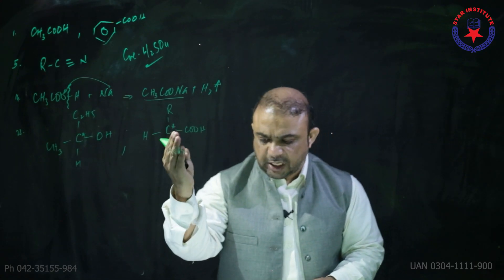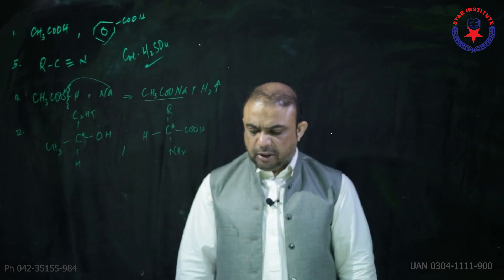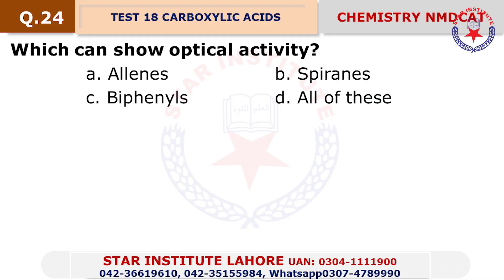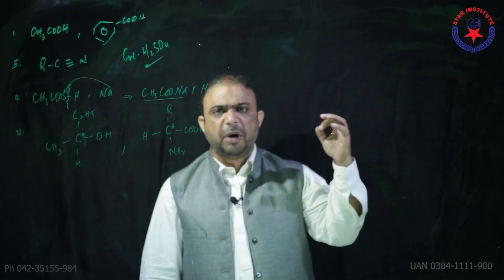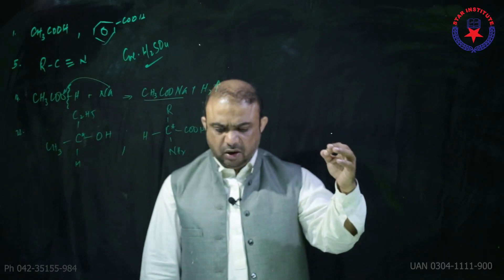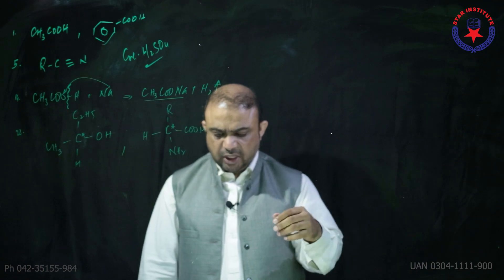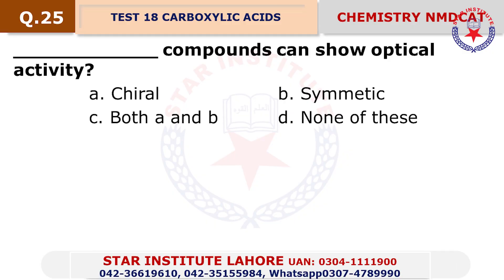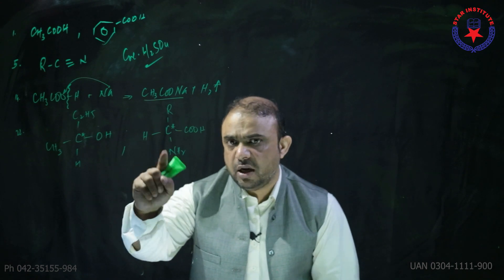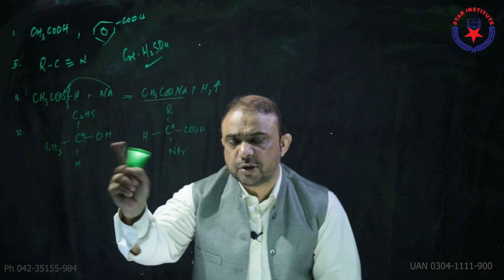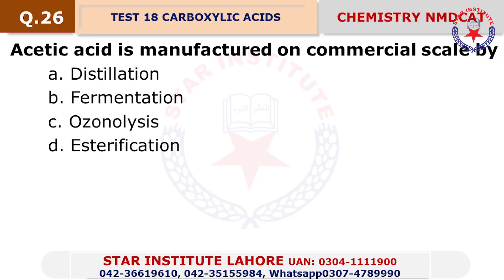Question number 23: A carbon atom connected to four different groups is optically active — choice alpha. Question number 24: Which can show optical activity? The three categories for chirality are allenes, biphenyls, and spiranes — all of these is the answer. Question number 25: A compound can show optical activity by having a chiral center.